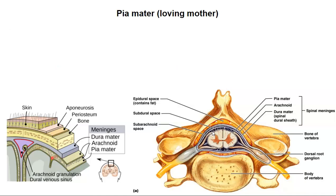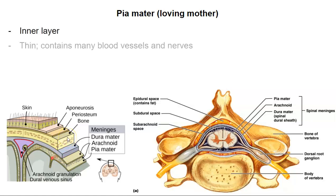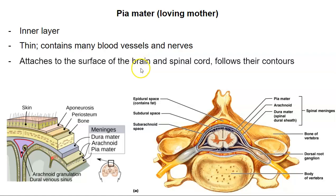The pia mater — that's Latin for 'loving mother' — is a more delicate membrane that's in contact with the spinal cord itself and with the brain. It's the innermost layer, does contain blood vessels and nerves, and it attaches to the surface of the brain and spinal cord, even following the contours of the brain. It's a thin layer right against the spinal cord and brain.